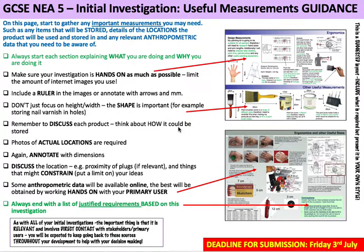So this might be things that are going to be stored in the product that you're going to be making, things that you might have to work around. It can also be locations — things like cupboards and depth of worktops and that kind of stuff. It's also going to cover anthropometric data, which is all the various body sizes, so for a person that's going to be things like hand measurements and range of movement and things like how far they can reach.